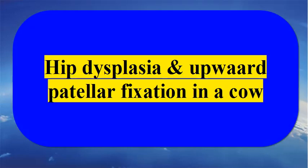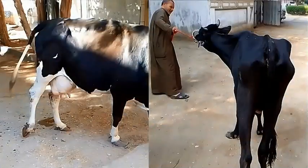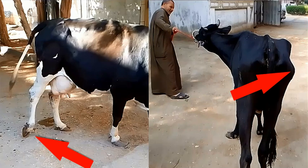Our clinical case today is an example of lameness as a result of two reasons. Not all cases of lameness are caused by one reason. In some cases, more than one reason can cause the lameness. The current clinical case is a hind limb lameness in a cow due to hip dysplasia and temporary upward patellar fixation.